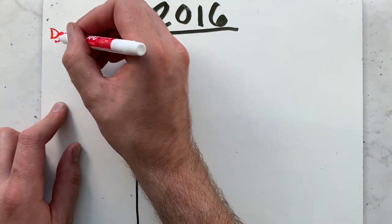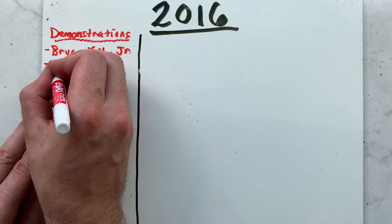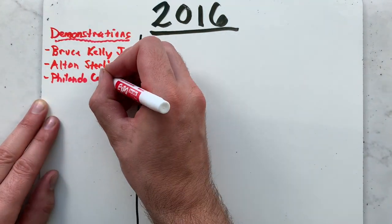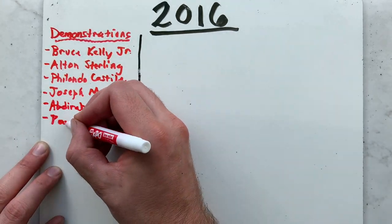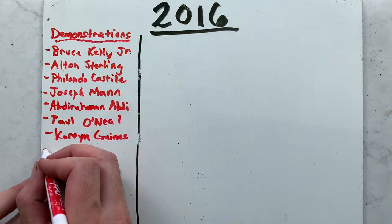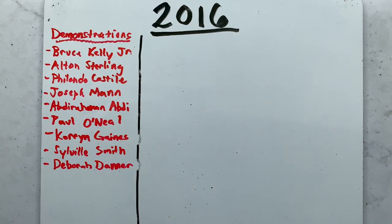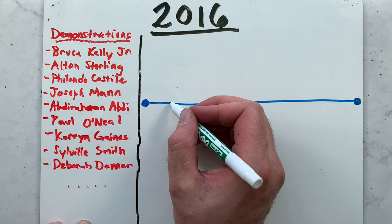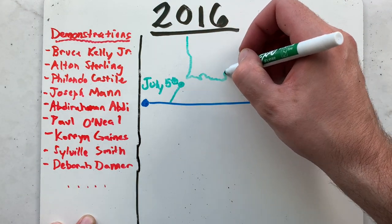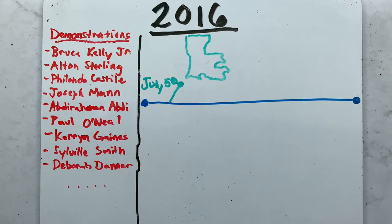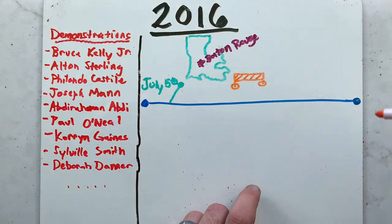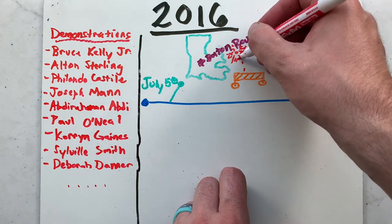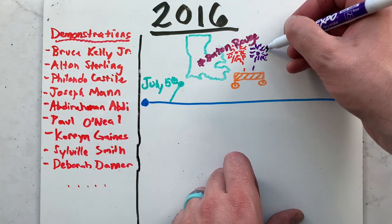In 2016, the BLM movement demonstrated against the deaths of the following African Americans by police actions: Bruce Kelly Jr., Alton Sterling, Philandro Castile, Joseph Mann, Aberdeerham Abdi, Paul O'Neill, Corin Gaines, Sylville Smith, and Deborah Danner, among others. On July 5th, Alton Sterling, a 37-year-old Black man, was shot several times while pinned to the ground by two white Baton Rouge Police Department officers in Baton Rouge, Louisiana. That night, more than 100 demonstrators in Baton Rouge set off fireworks and blocked an intersection to protest Sterling's death.